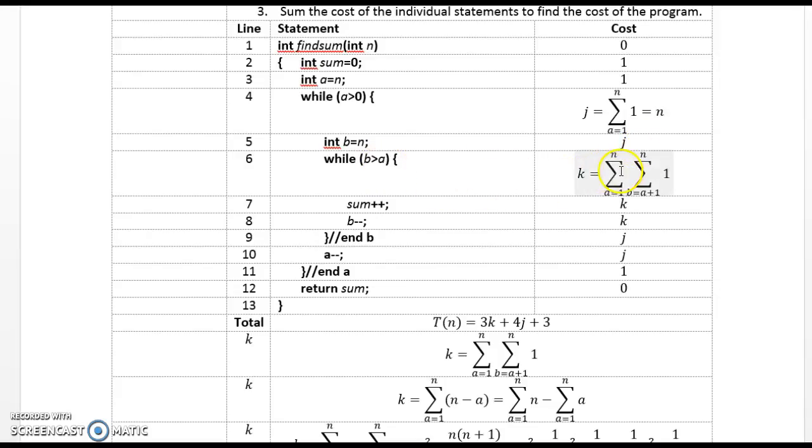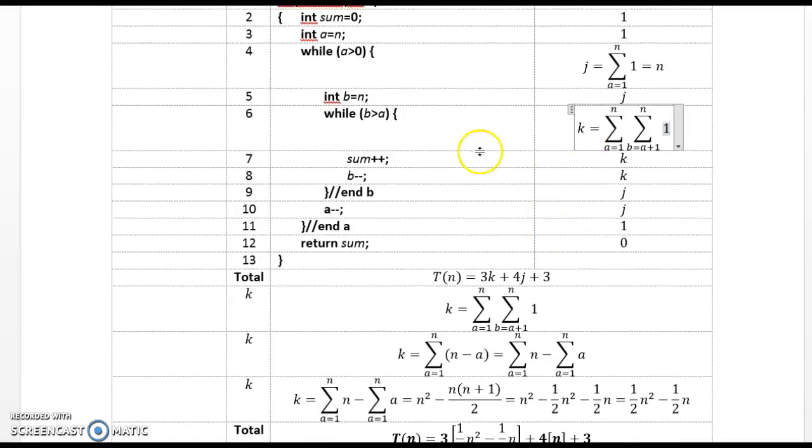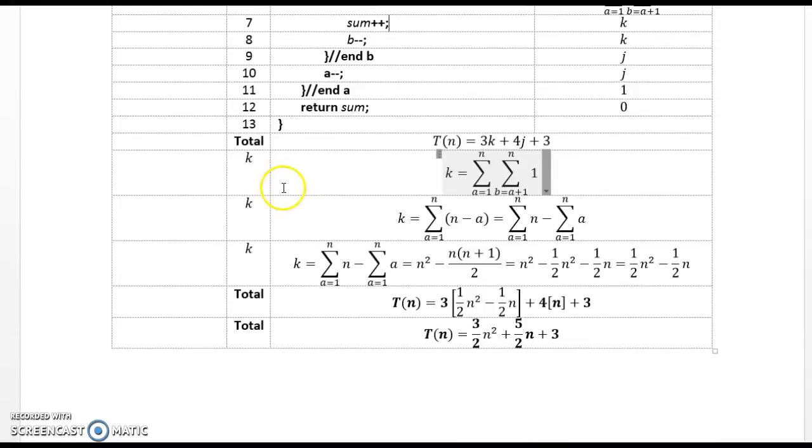Since this is a nested loop, we're going to have a nested double summation, from a equal 1 to n, the first summation, and from b equal a plus 1 to n, of the second summation. There's one statement that's executed each time, so our value here in the operand section of the summation is 1. We increment sum every time that happens, so that happens k times. b is decremented k times, we exit the loop j times, we decrement a j times, and we exit the a loop one time.